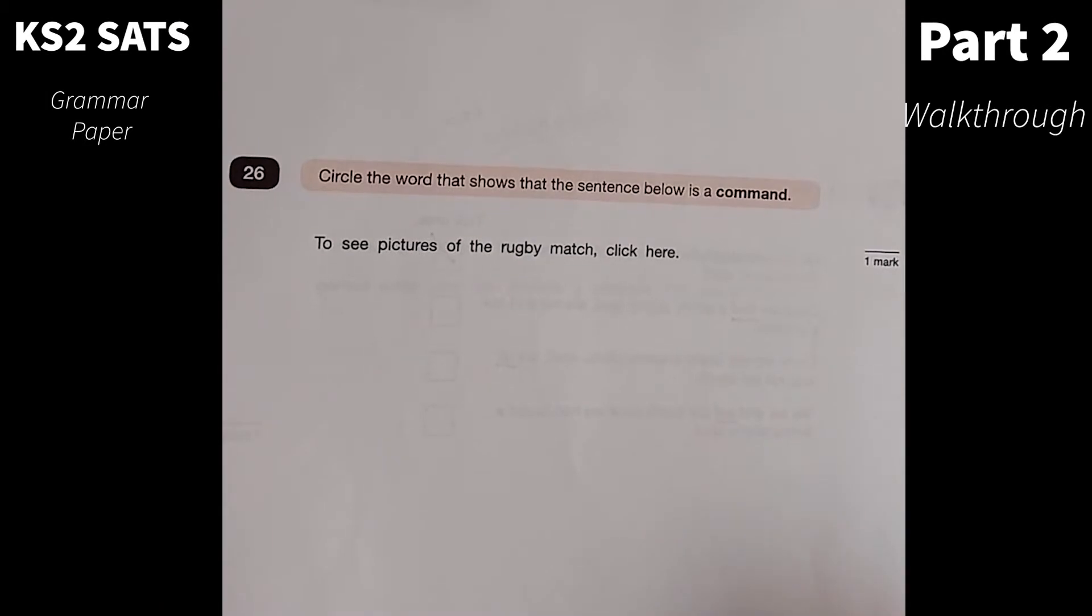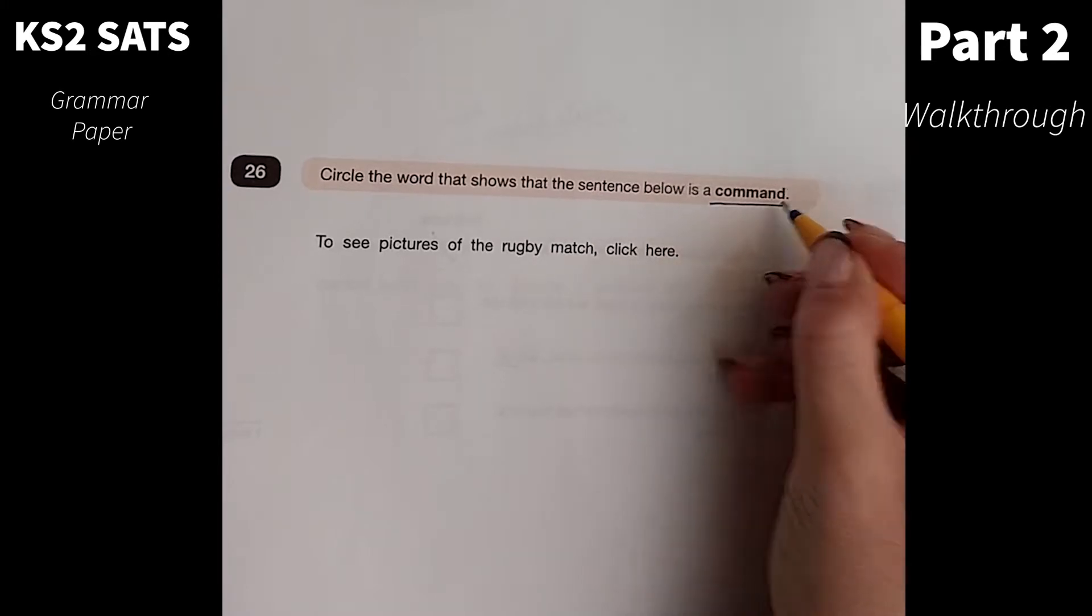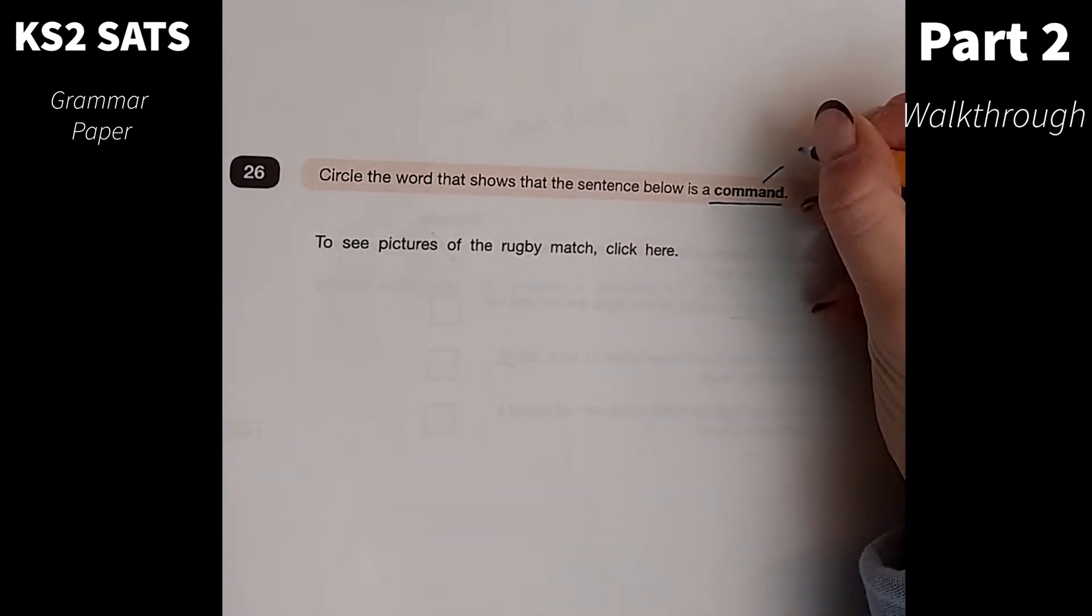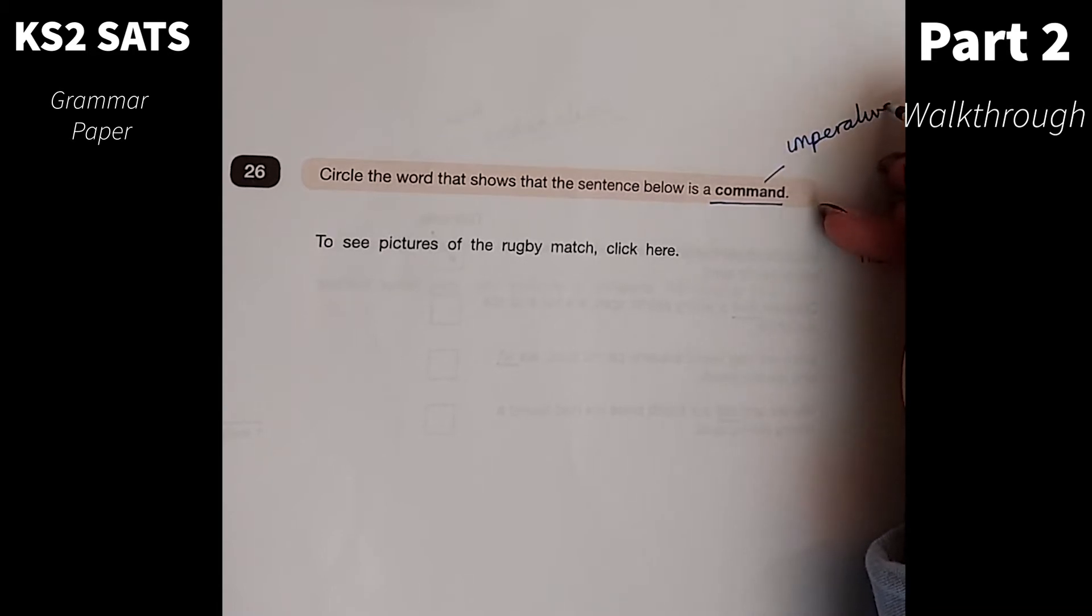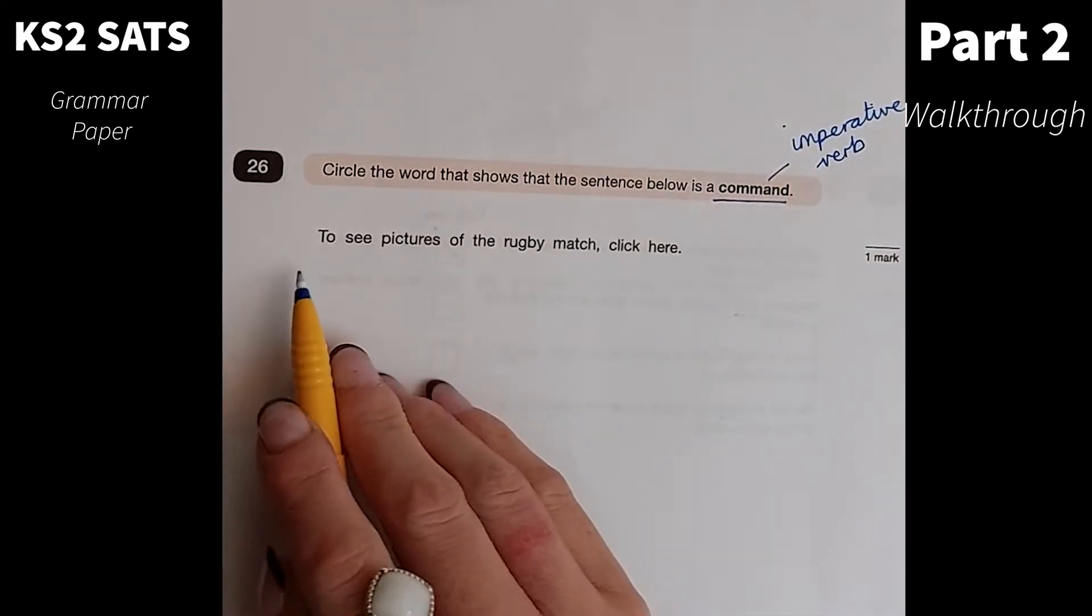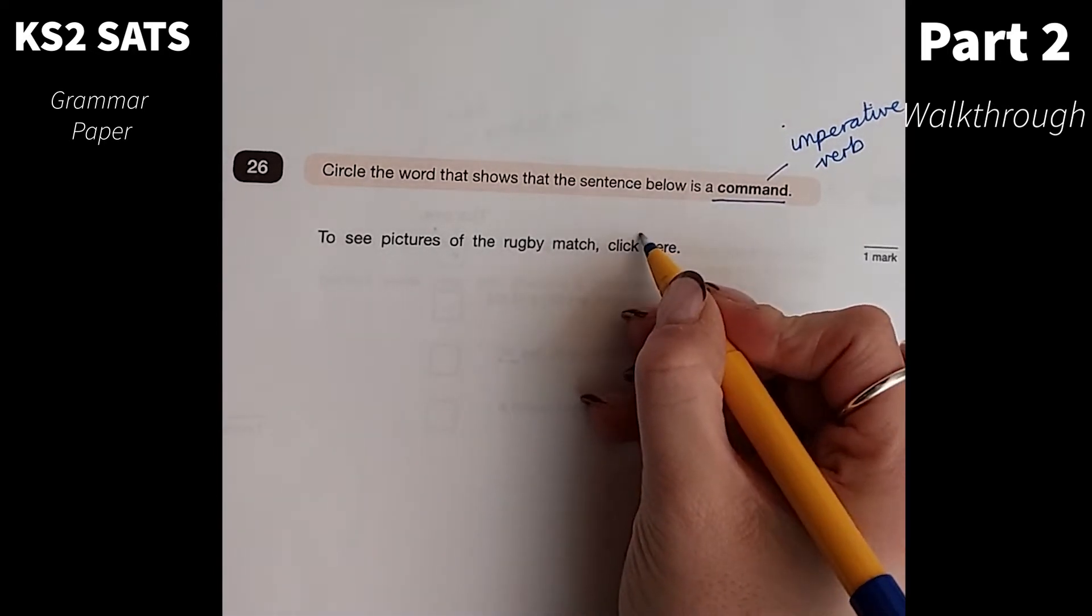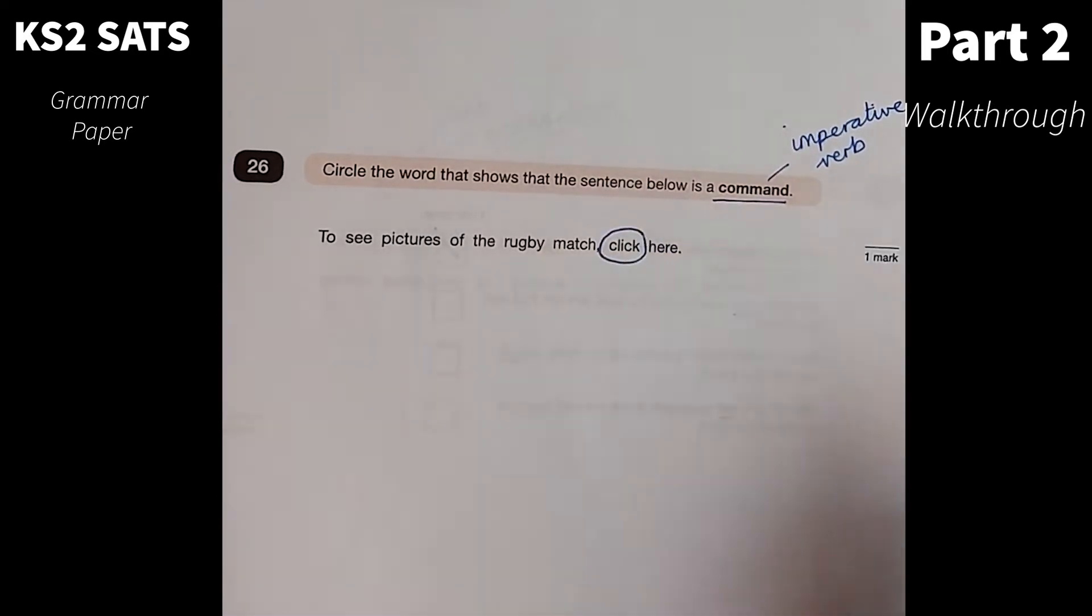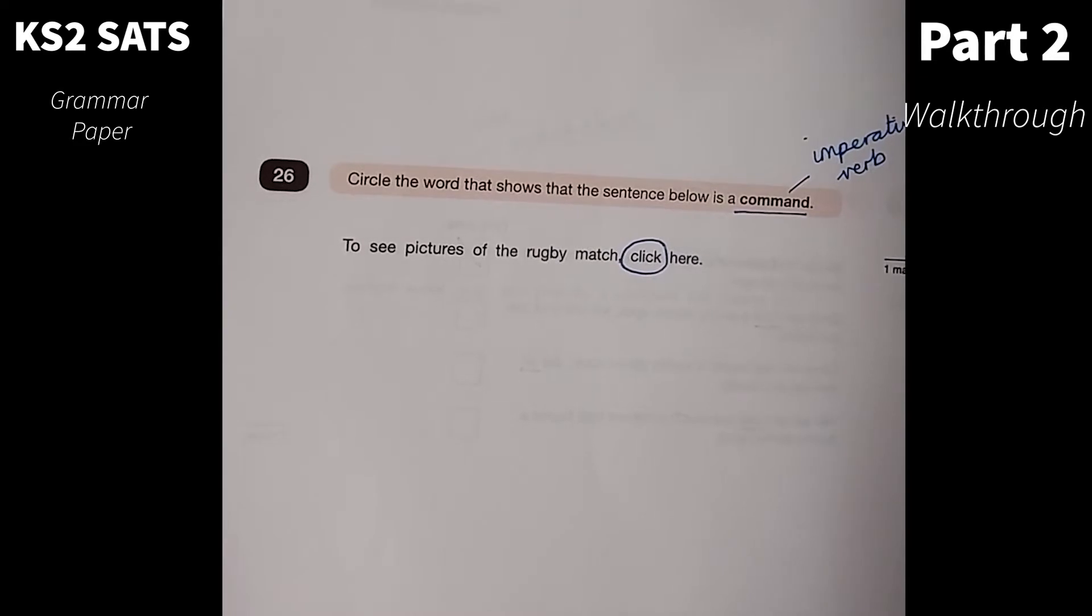Number 26. Circle the word that shows the sentence below is a command. I know that a command is an instruction and it usually starts with an imperative verb. Lower down in the school, they might call it a bossy verb. It tells you what you need to do in that situation. To see pictures of the rugby match, click here. So in that situation, click is the word that shows me that that's a command.